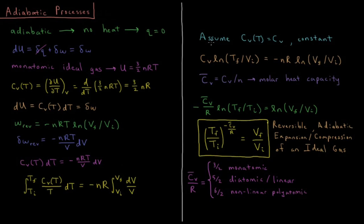If we assume that the constant volume heat capacity is approximately constant over the temperature range — a reasonable approximation for mild changes of a few or tens of Kelvin, but not for changes of hundreds of Kelvin — then we get Cv times log(T_final / T_initial) equals negative nR times log(V_final / V_initial), evaluating both integrals at the initial and final conditions.